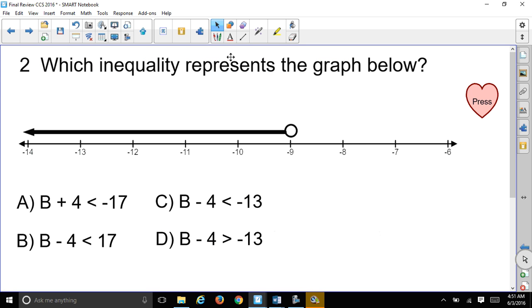Which inequality represents the graph below? So here we have a graph. I notice there's a circle on the number negative 9 pointing to the left direction. So we want to know which of these inequalities represents the graph below.